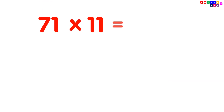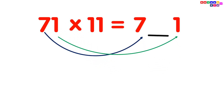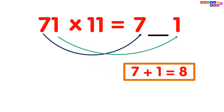71 multiplied by 11. Simply write the digits 7 and 1. Then add the digits: 7 plus 1 equals 8. Put the 8 between digits 7 and 1, and you will get your answer 781.